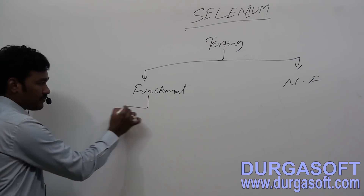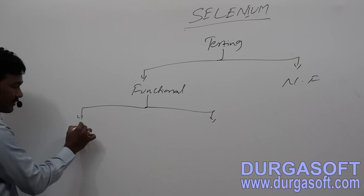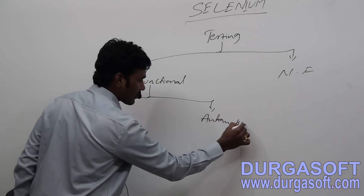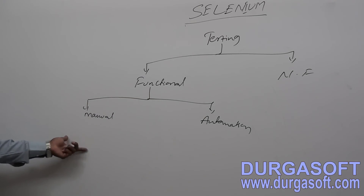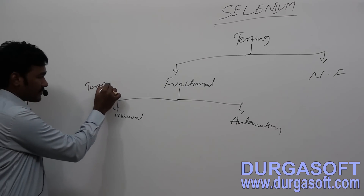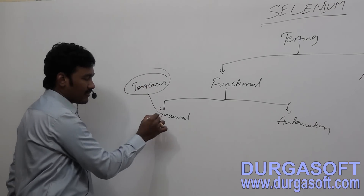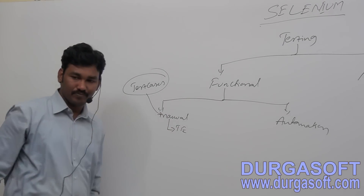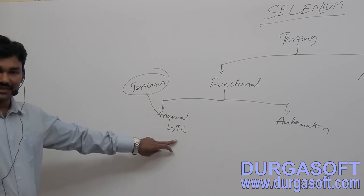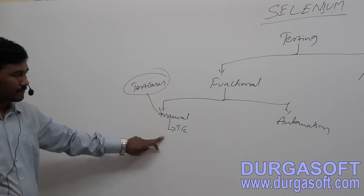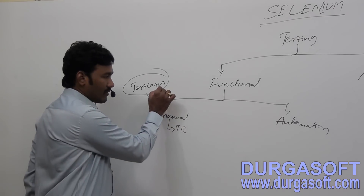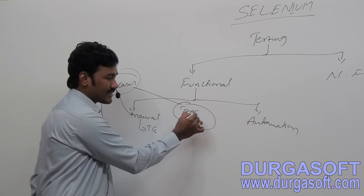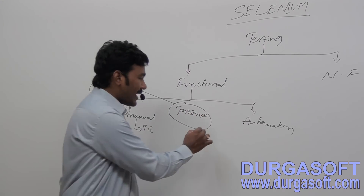In Functional, we have two types: Manual Testing and Automation Testing. In Manual Testing, our main activity is to write test cases, and these test cases will be executed manually by the Test Engineer. When it comes to automation, all the manual test cases will be converted to Test Scripts with the help of some tool.